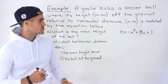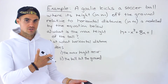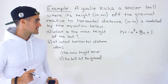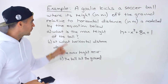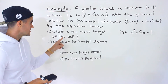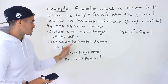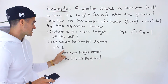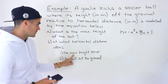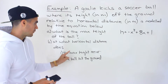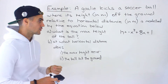The equation is h equals negative x squared plus 8x plus 1, where h is the height and x is the horizontal distance. Given that equation, we have to find what is the max height of the ball, and then at what horizontal distance does the max height occur, and at what horizontal distance does the ball hit the ground.